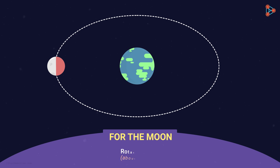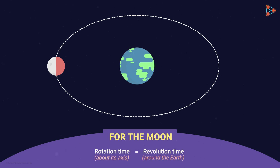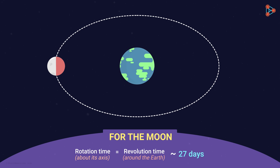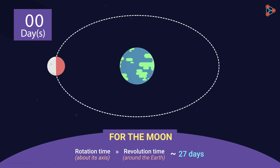The time taken by the moon to rotate about its axis once is almost the same as the time it takes to revolve around the earth once — both approximately 27 days. This gives us the answer. Here's what actually happens in this time period.